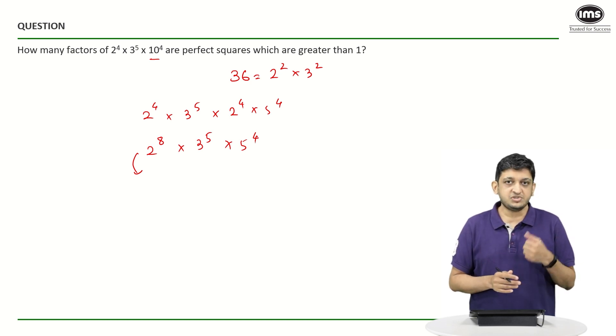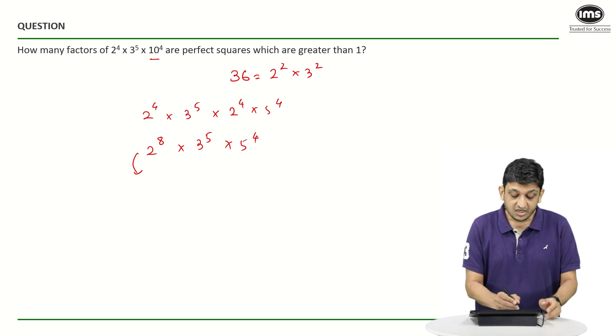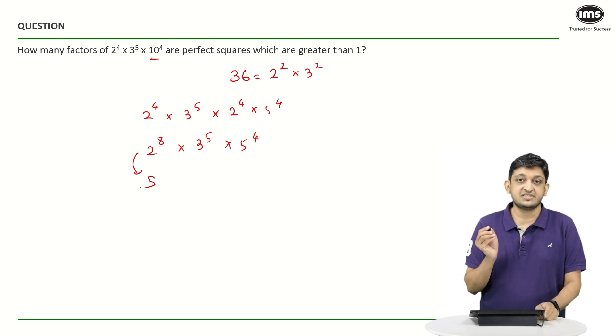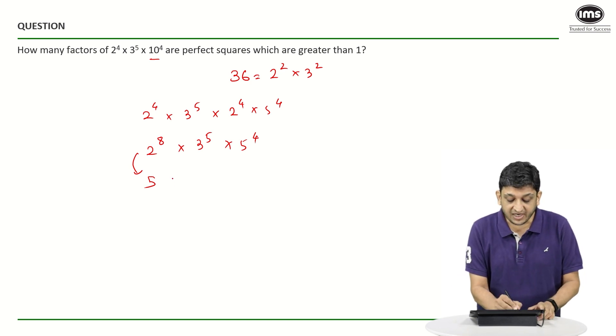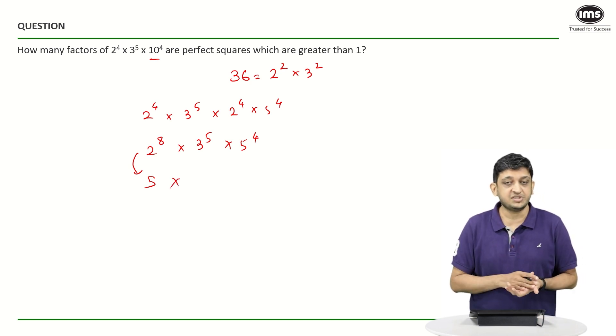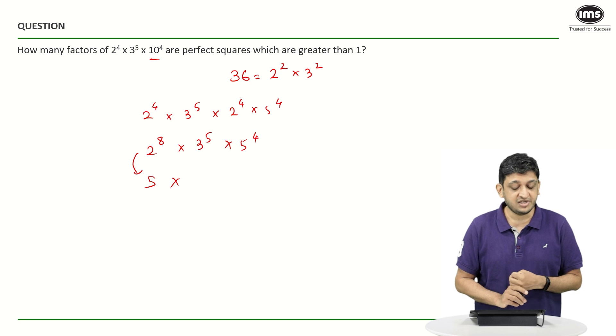2⁰ is possible, 2² is possible, 2⁴, 2⁶, and 2⁸ are all possibilities. So we can say that there are 5 ways to select a power of 2 from the number that we have here. Similarly, if you look at the powers of 3 that are possible, 3⁰ is a possibility, 3² is a possibility, and 3⁴ is a possibility.